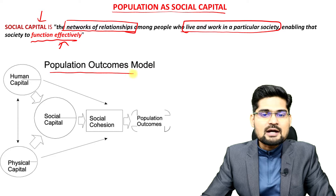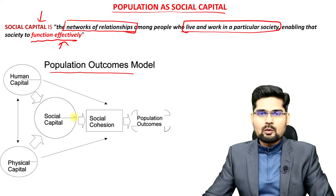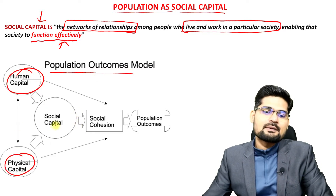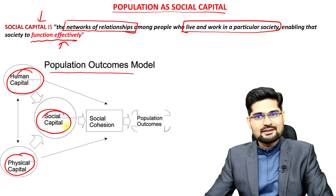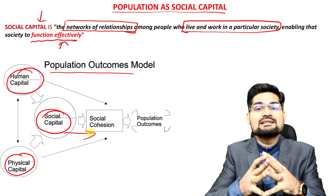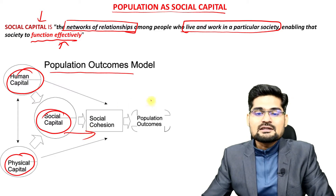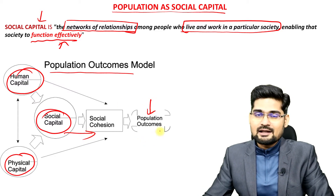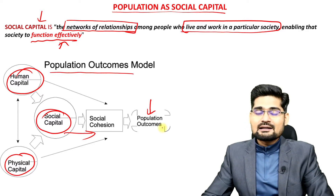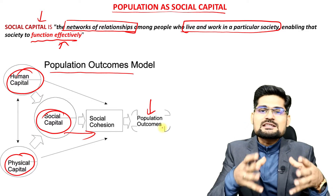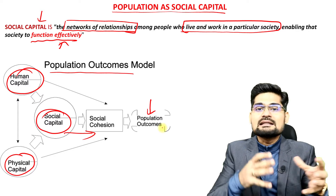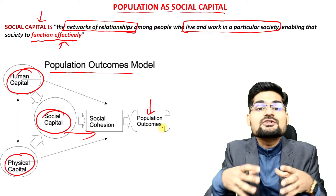If you look into this population outcomes model, we see that human capital alongside physical capital converts into social capital, which is very important to give rise to social cohesion. From that, we get the outcomes — what we say is the population dividend, the demographic dividend. So let's elaborate the concept of social capital further and understand its uses as a concept related to population geography.